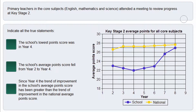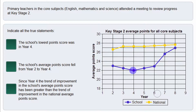In this question we are given a chart that shows the Key Stage 2 average points for all core subjects. The yellow line represents the national score and the blue line represents the school score. The first statement claims that the school's lowest point score was in year 4. We need to look for the lowest point on the blue line, and we can see that was indeed in year 4 with 22. So this means that the first statement is true.